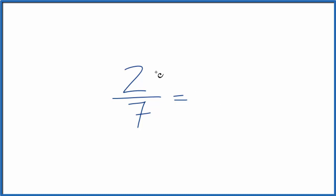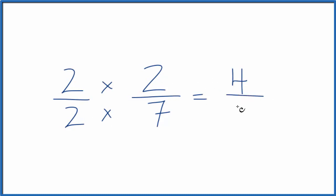We could multiply this by 1, and that wouldn't change the value. But let's multiply it by 2 over 2. 2 divided by 2 is 1, so we're not changing the value. But now 2 times 2 is 4, and 2 times 7, that's 14. So 2 sevenths and 4 fourteenths, those are equivalent fractions. If you divided 2 by 7 and 4 by 14, you'd get the same decimal value.